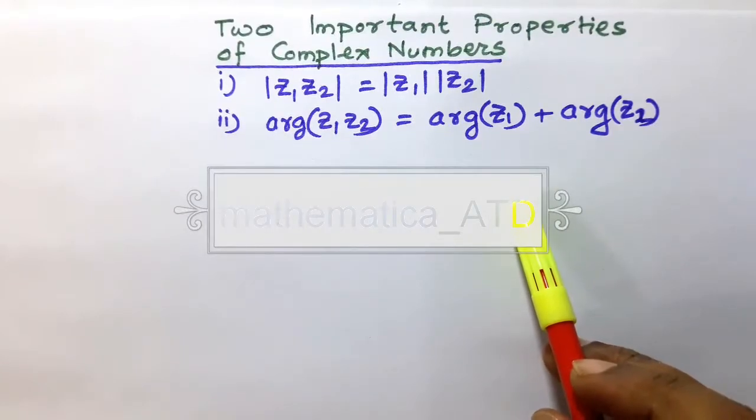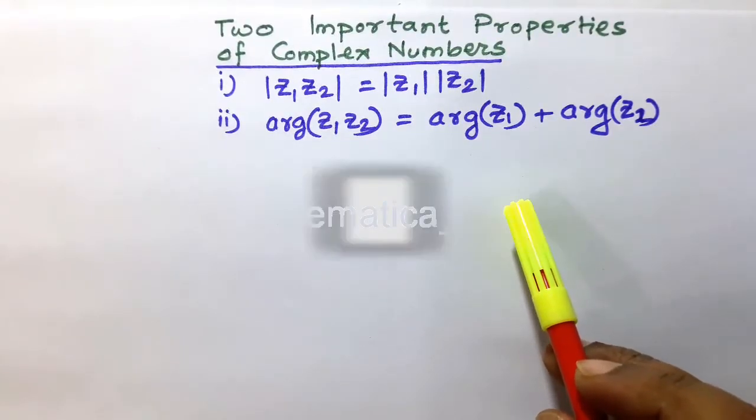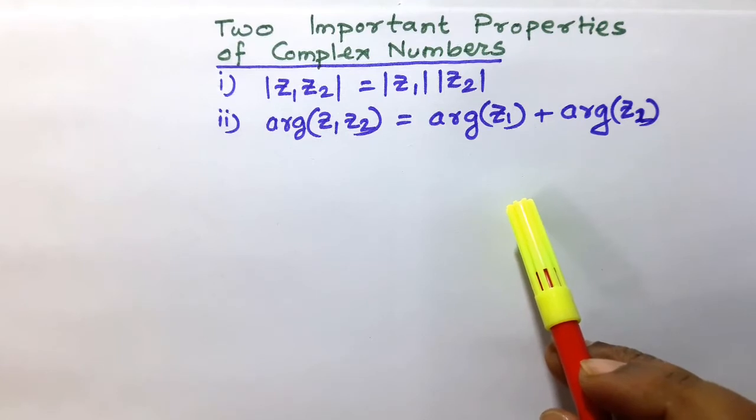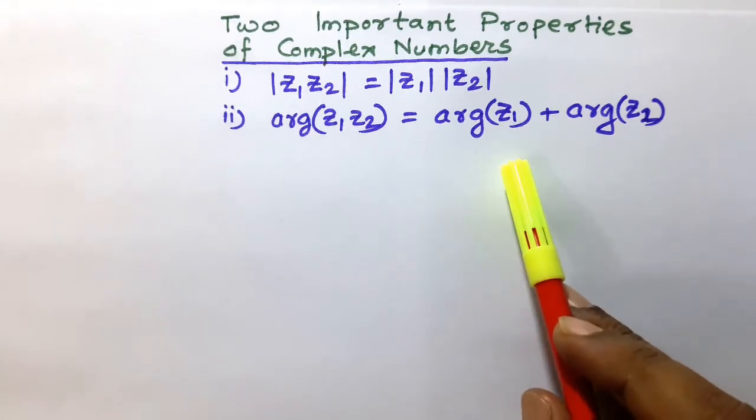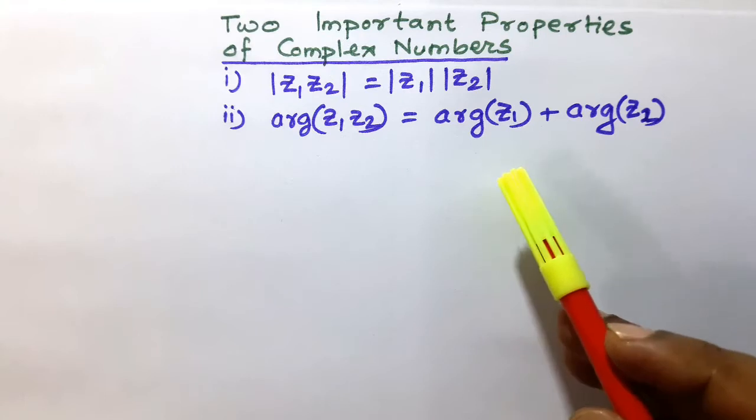Dear friends, we shall show two important properties of complex numbers. First one is modulus of Z1, Z2 is equal to modulus Z1 into modulus Z2, and the second one is argument of Z1, Z2 is equal to argument of Z1 plus argument of Z2.